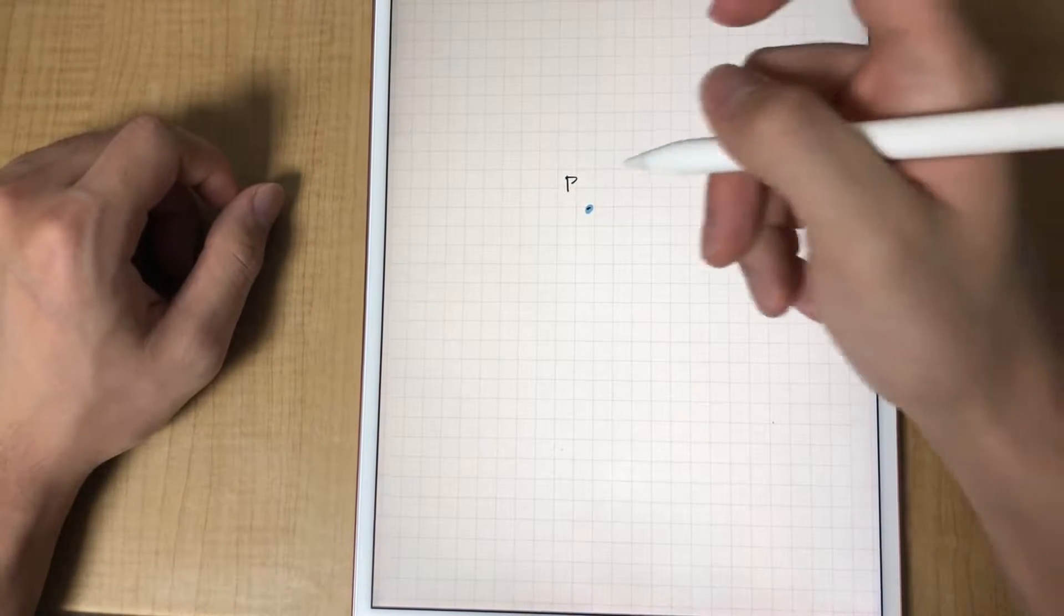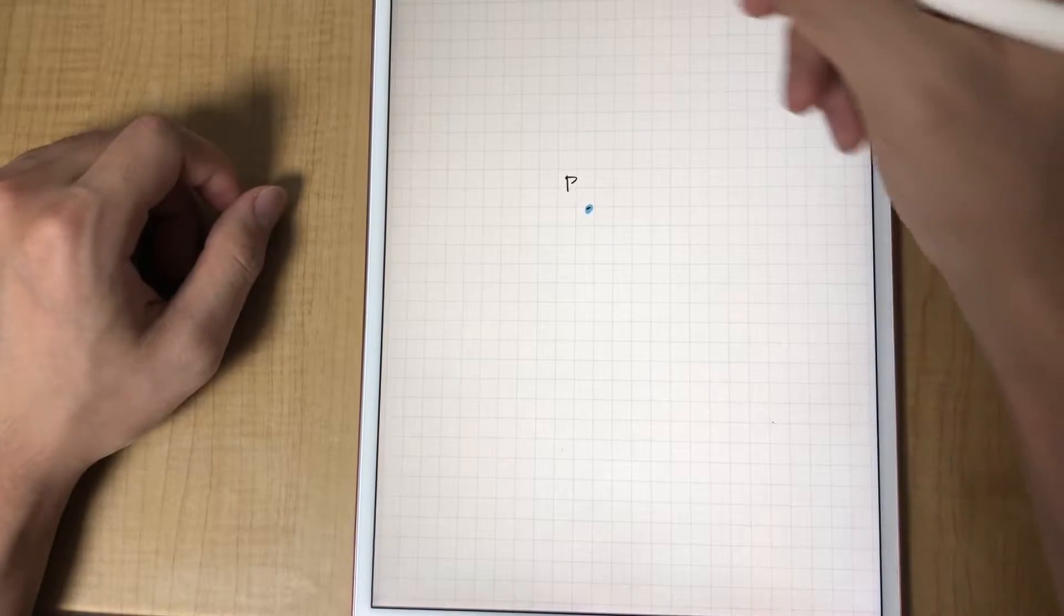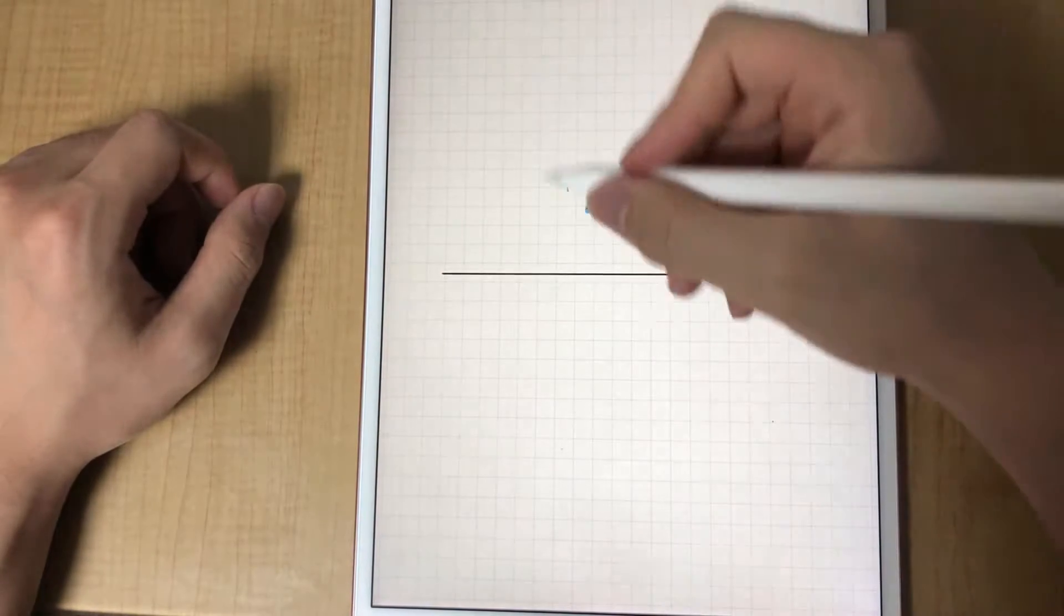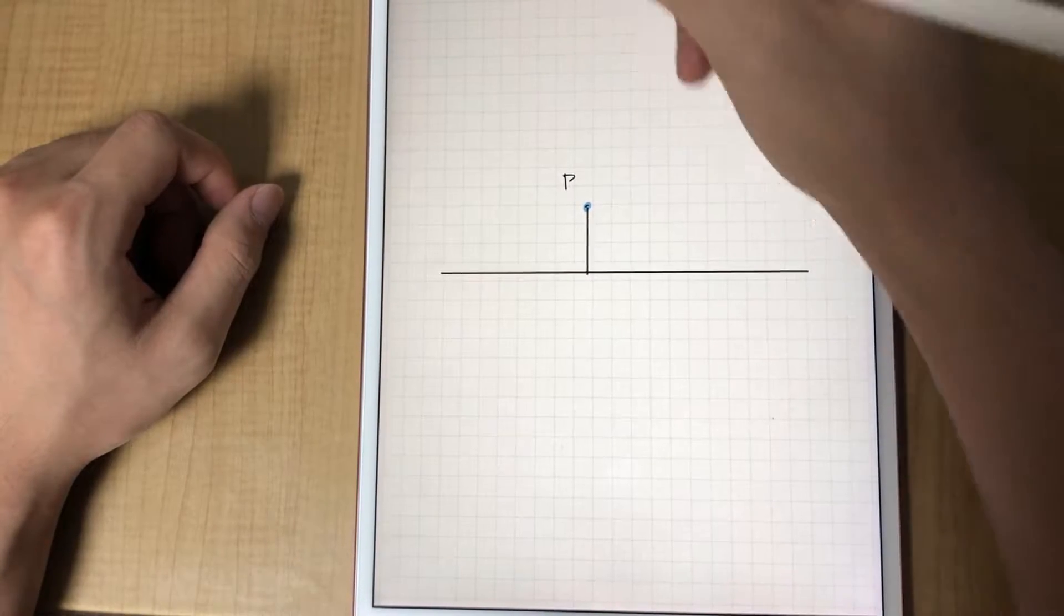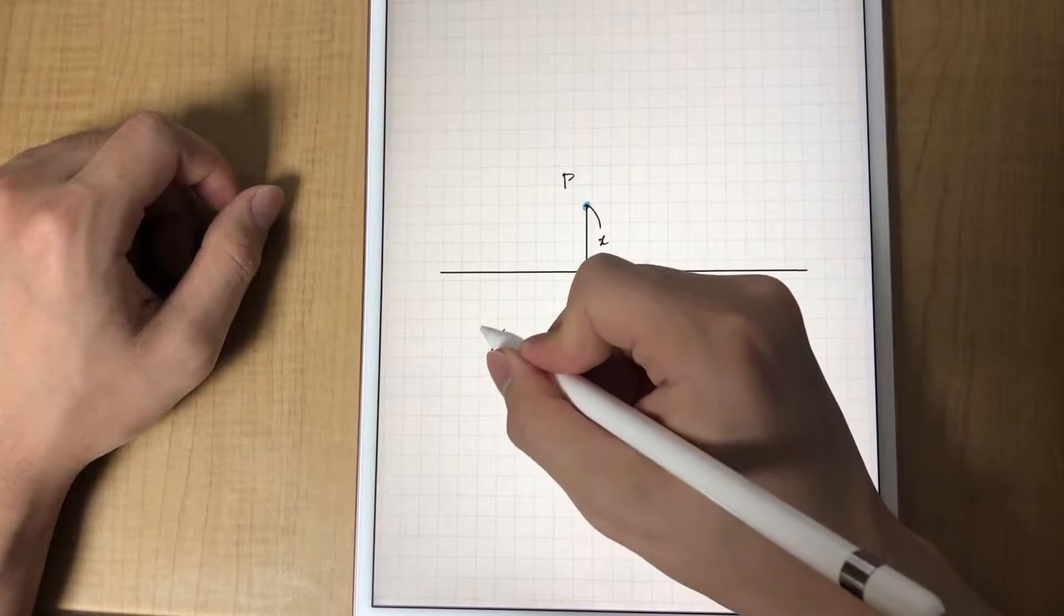For this needle, only the closest line to this P has any chance of being crossed. So we'll be drawing just one line and write the distance between this line and this dot as x. x can range from 0 to 1.